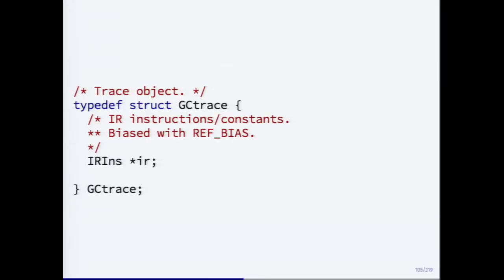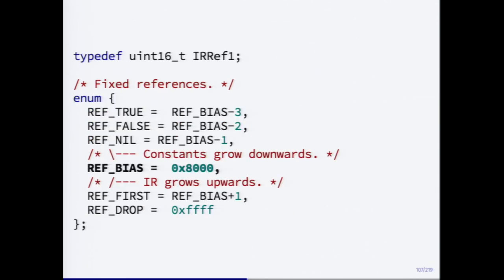IR is a very important part of any compiler. This is how the trace object looks in C code. The IR is stored by value — it's an array of IR instructions stored in memory by value. There is something interesting in a comment saying 'biased with ref bias.' IR instructions are referenced by 16-bit numbers which are indices into this array, but they're not actual real indices. You organize IR in an interesting way: all non-constant instructions go forward and all constant instructions go backwards — like a butterfly. The IR array pointer is somewhere in the middle where the 'queen lives.'